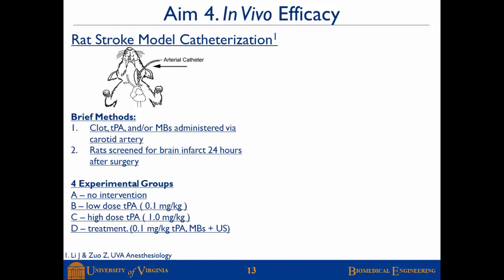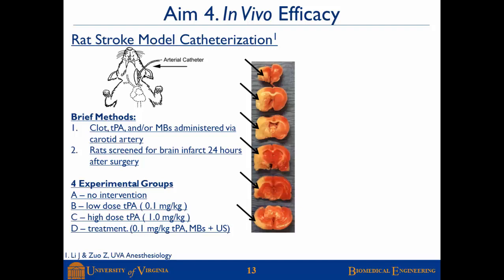There were four experimental groups. Group A received no intervention — clot but no TPA, no ultrasound, no microbubbles. Group B received the clot with a low dose of TPA. Group C received the clot with a high dose of TPA. Group D is our treatment group with a low dose of TPA plus microbubbles and ultrasound therapy. A control animal with no intervention clearly shows one brain hemisphere pink (healthy living tissue) and the other white (tissue that has died due to clot occlusion).